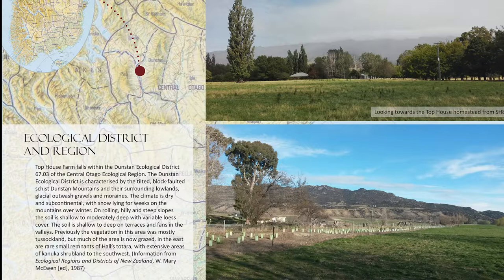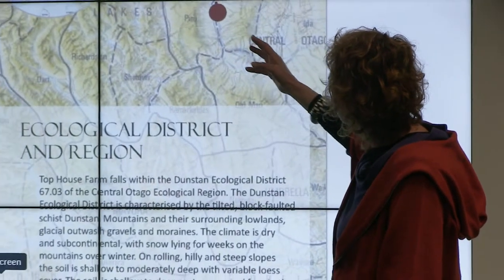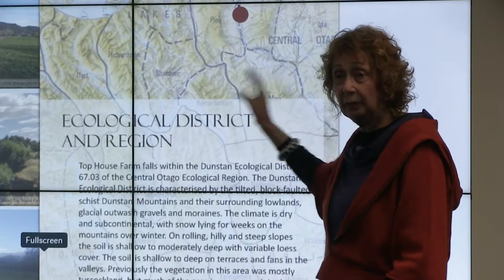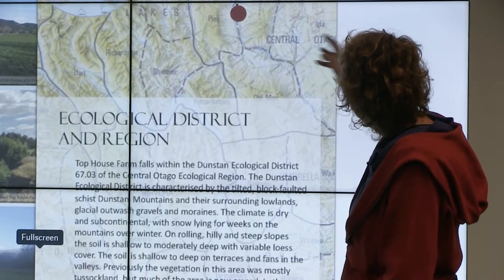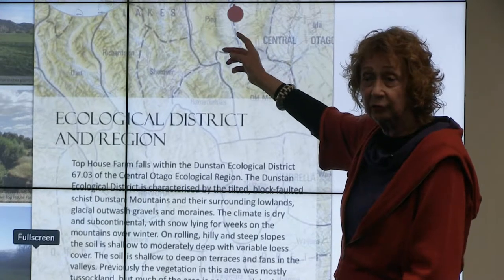As landscape architects we like to think we need systems to set the context for planning, and the only one we really have at the moment — and I don't even think you can find them digitally, it's bizarre — is ecological regions and districts. So that sets some sort of biophysical context. We're in the Central Otago ecological region and the Dunstan ecological district.